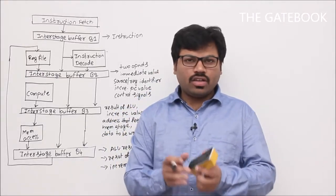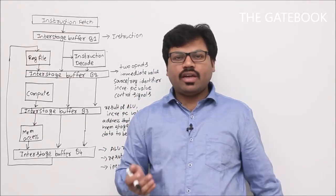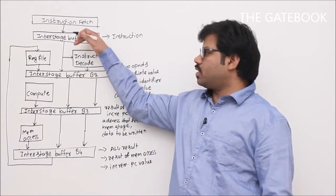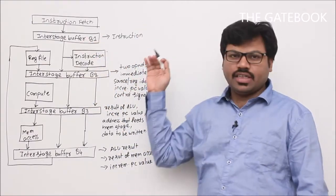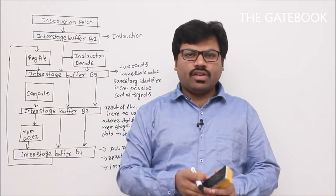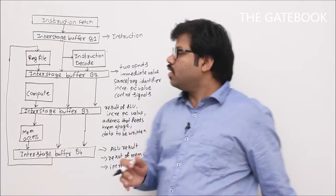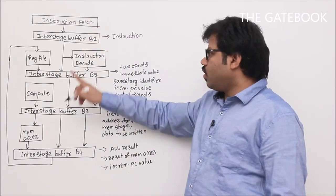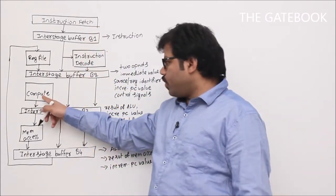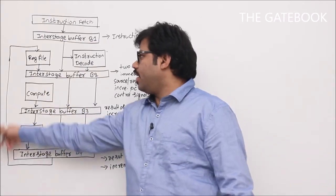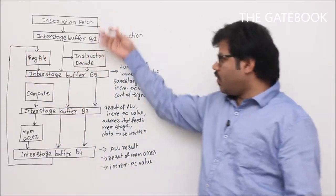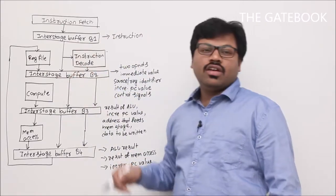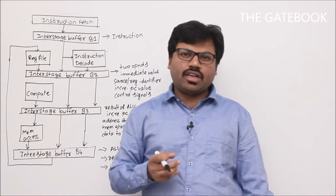Before going to understand why we cannot take an arbitrary number of stages in a pipeline, you should understand the buffers which are required in between the stages. After that I'll explain why we cannot have any number of stages. Let us take the five-stage model: instruction fetch, decode, computation, memory access, and write-back. This is the way hardware is designed in stages. Now, why are these buffers required?